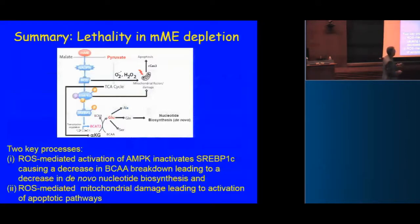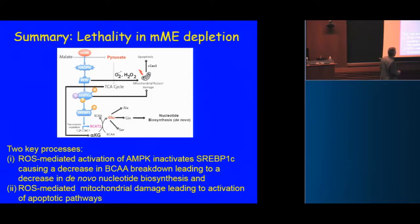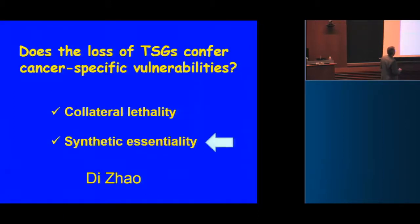So collateral lethality now has yet another example — we're working through about half a dozen others. This framework should identify potentially new targets outside the typical oncogene/tumor-suppressor axis that result from bystander effects. Mechanistically, the two major reasons for mitochondrial malic enzyme importance relate to de novo nucleotide biosynthesis and maintenance of ROS homeostasis at a level that keeps mitochondria intact — otherwise you undergo caspase-mediated apoptosis. That was collateral lethality.